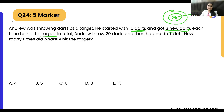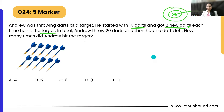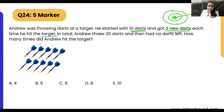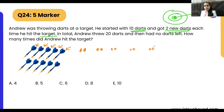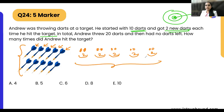Andrew starts with 10 darts. Each time he hits the target, he gets 2 new darts. If we assume he hit the target with his first five throws, he gets 2 plus 2 plus 2 plus 2 plus 2 equals 10 extra darts. So 10 original plus 10 gained equals 20 darts total.